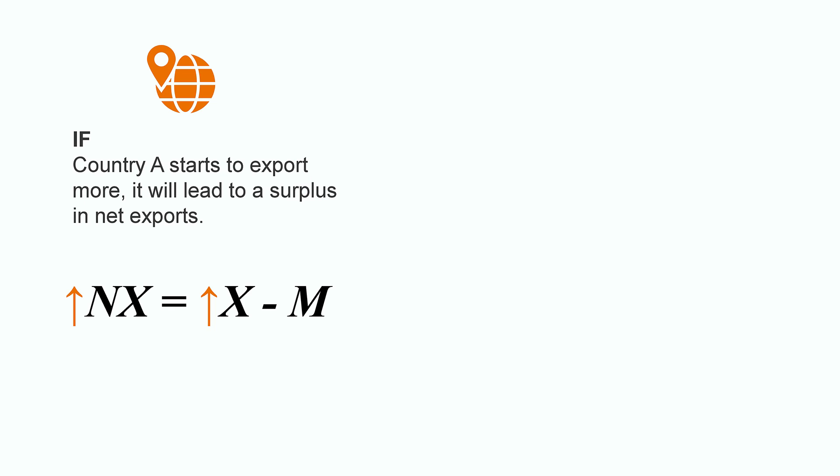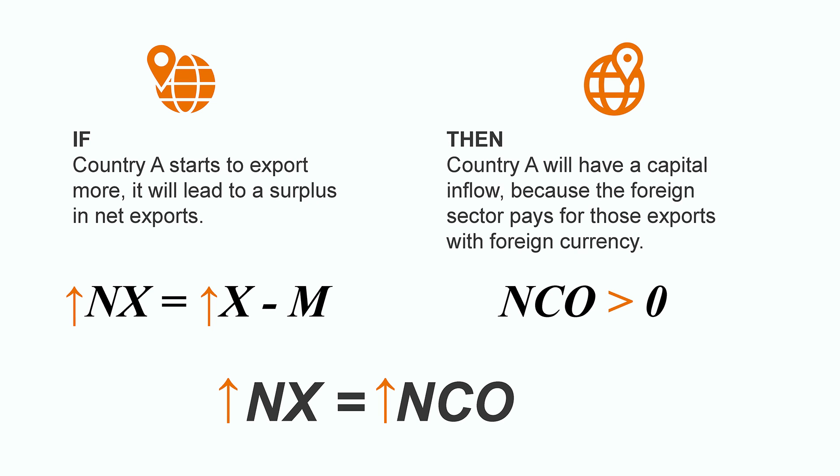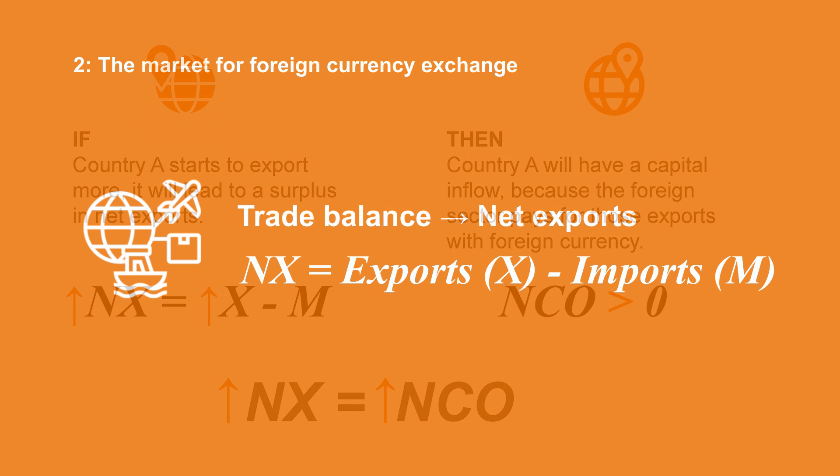For example, if country A starts to export more, leading to a surplus in net exports, this means that country A will have capital inflow on the other side, because the foreign sector pays for those exports with foreign currency. In other words, country A sells goods and services as exports to the foreign sector. In return, the foreign sector will provide currency to pay for the exports. That incoming currency is what we call capital inflow. So country A's exports translate to added capital or reserves. As you may see in the identity equation, the trade surplus equals the capital inflow.